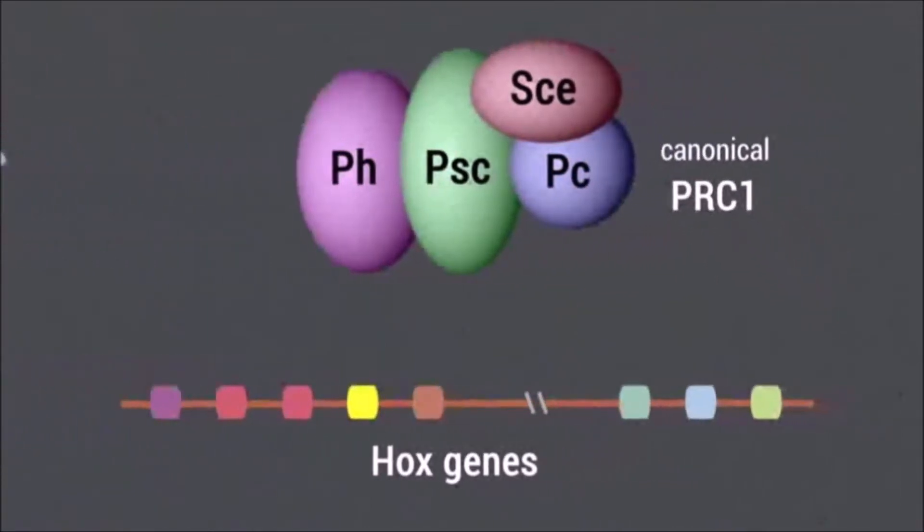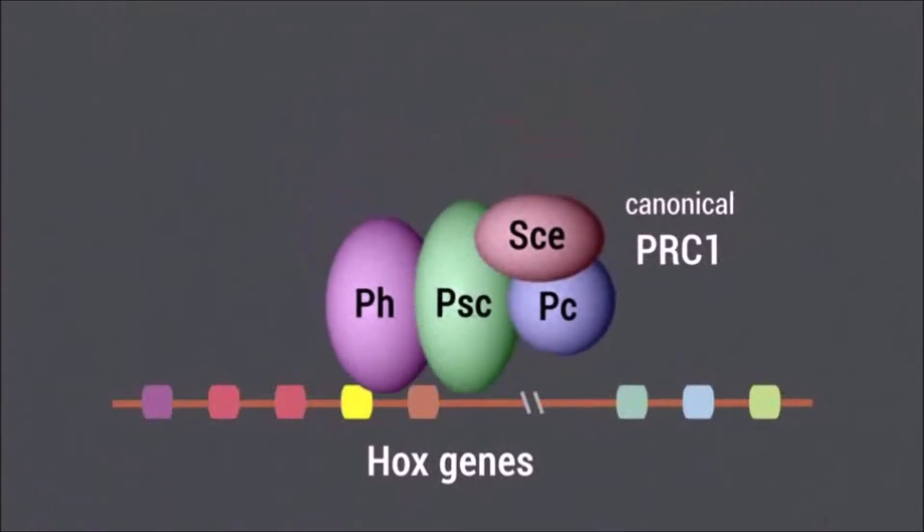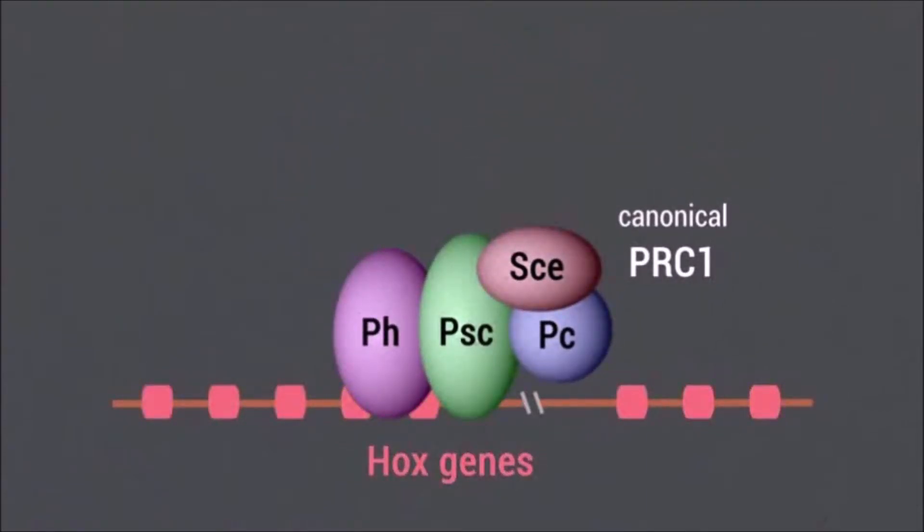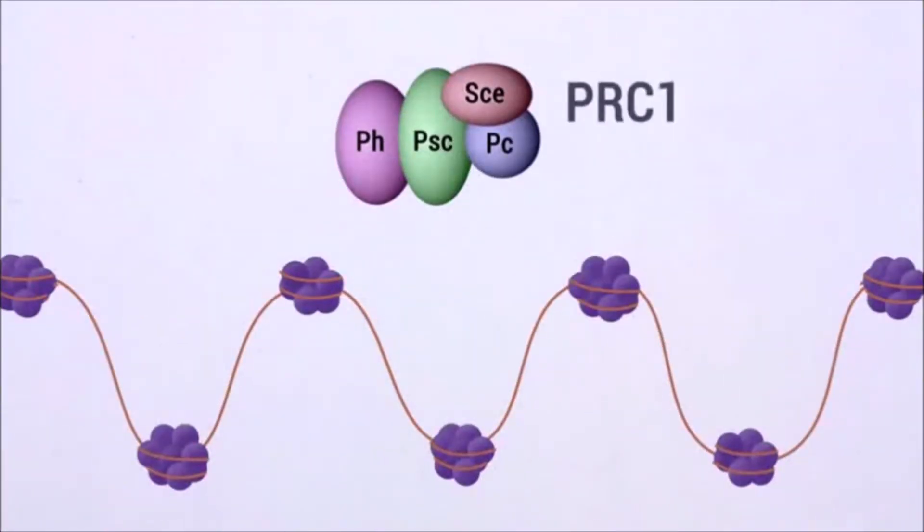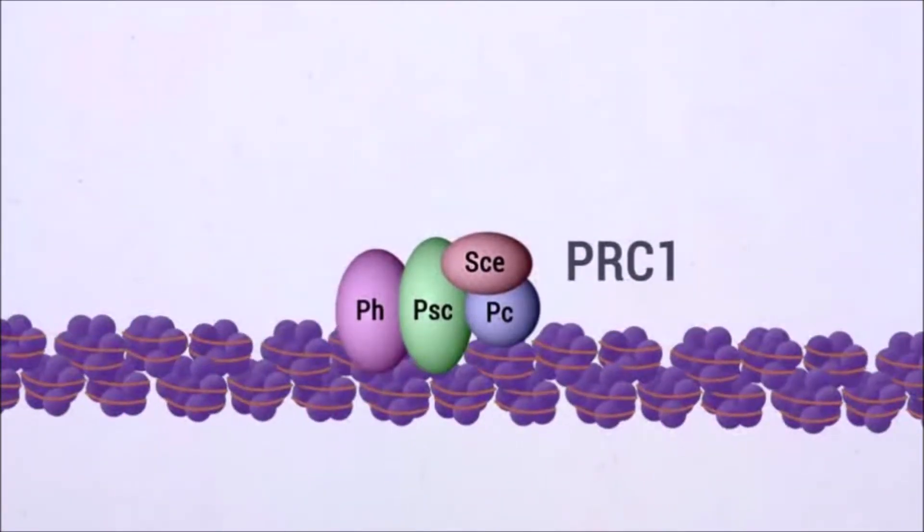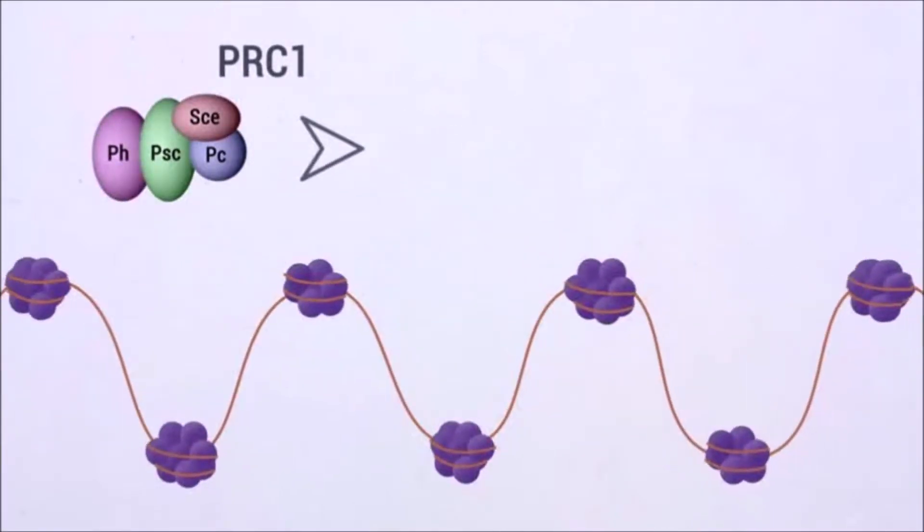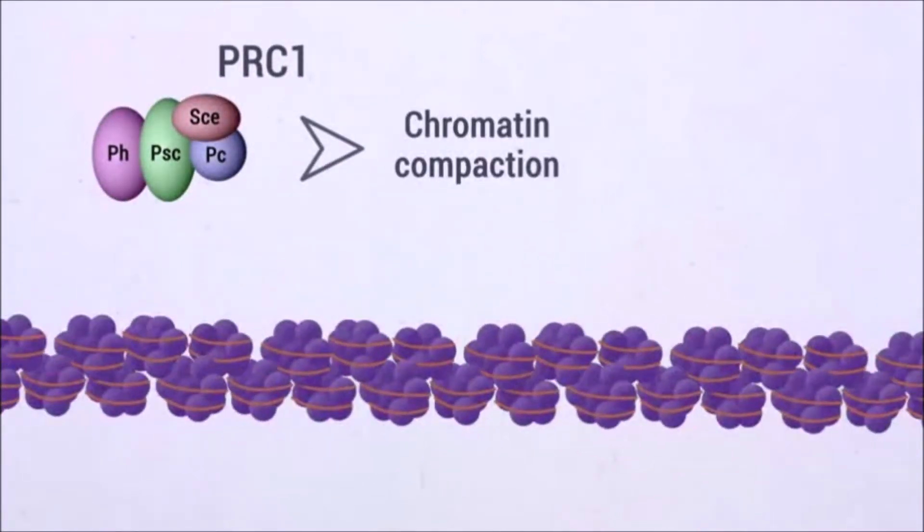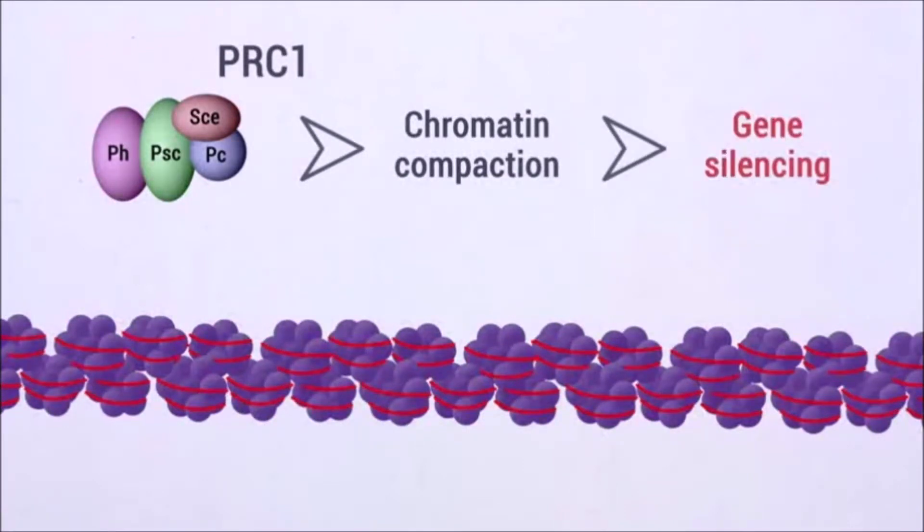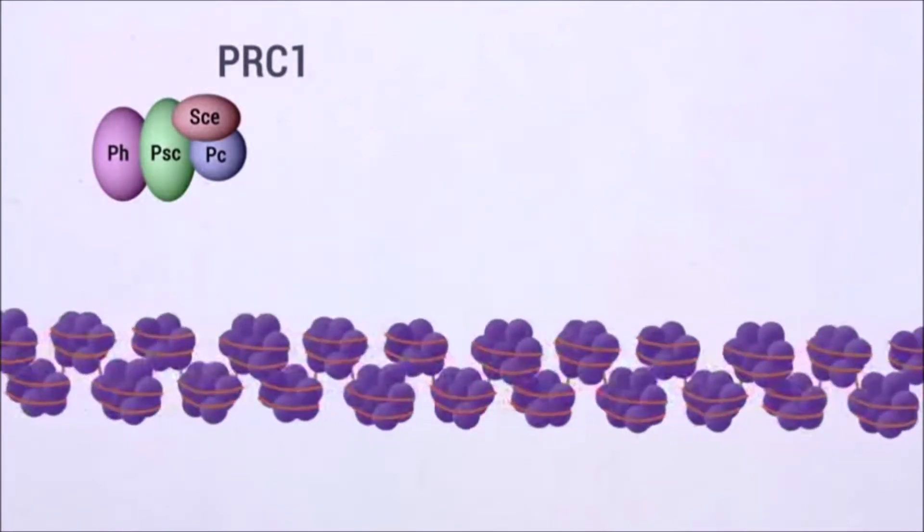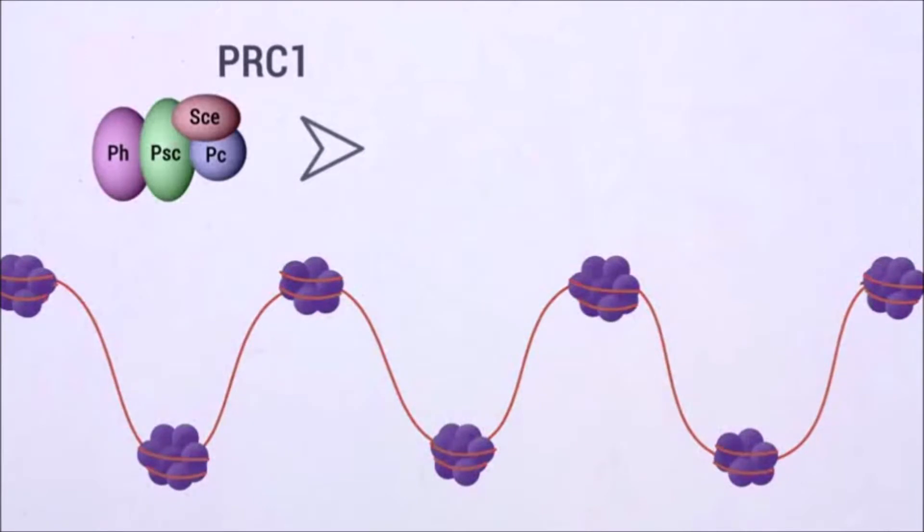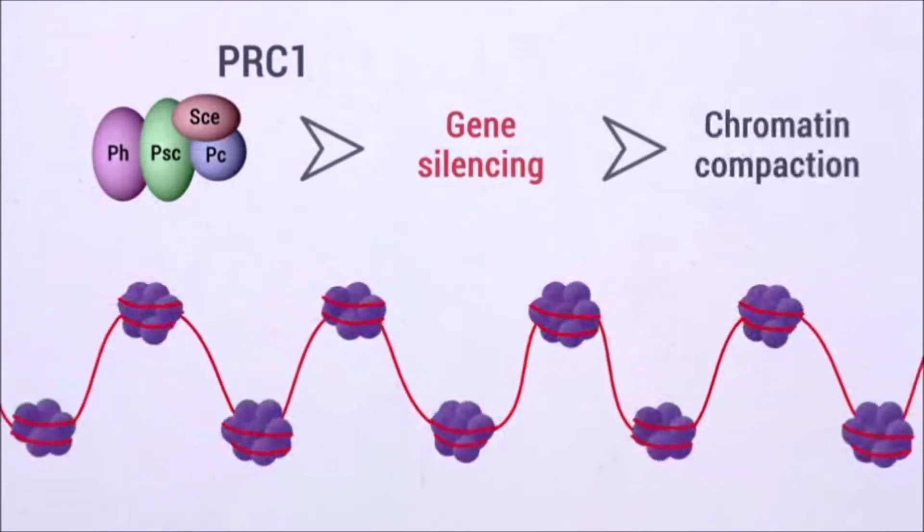The mechanism by which canonical PRC1 mediates gene silencing is not understood. It has been shown that PRC1 is involved in chromatin compaction in vitro and in vivo, but it is unknown whether PRC1-dependent transcriptional silencing is a consequence of its role on higher-order chromatin folding, or whether higher-order chromatin compaction may instead be a consequence of silencing.